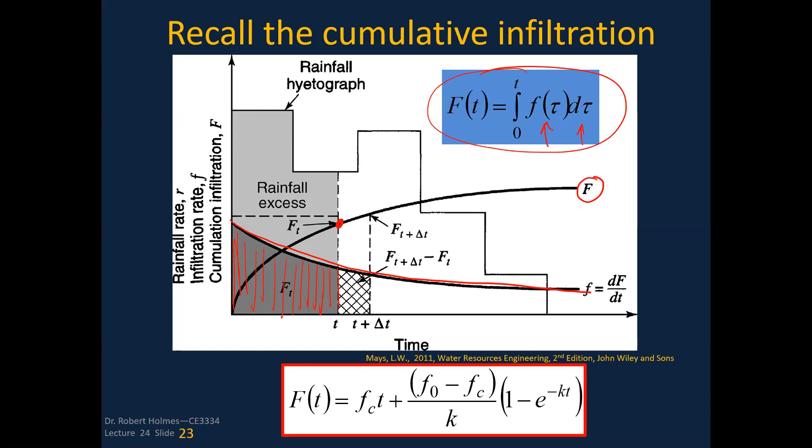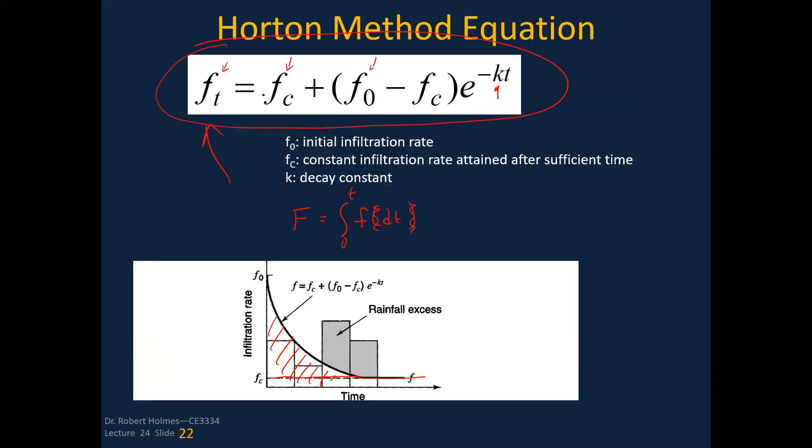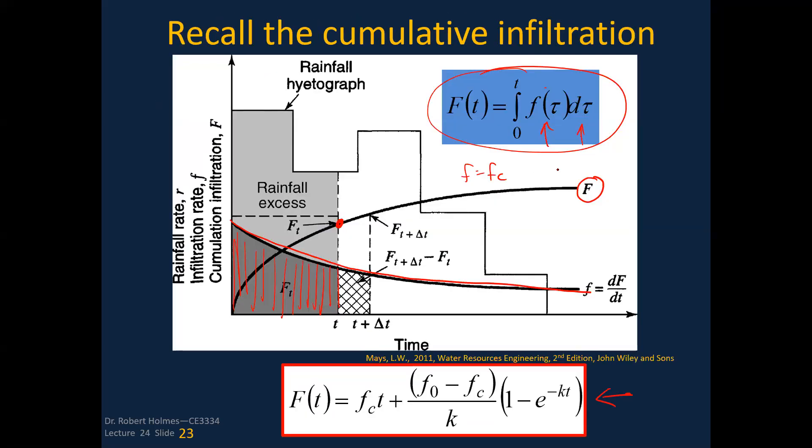And so for the Horton model, this is the equation for that when you integrate f. Remember f is fc plus (f0 minus fc) times e to the minus kt.